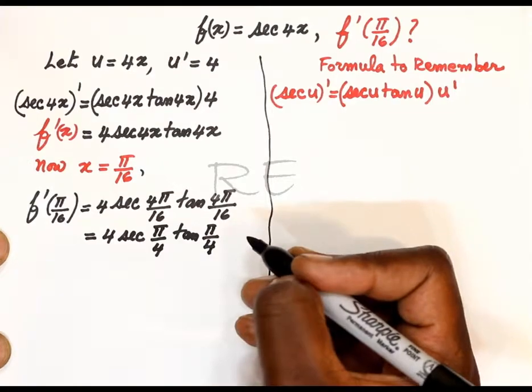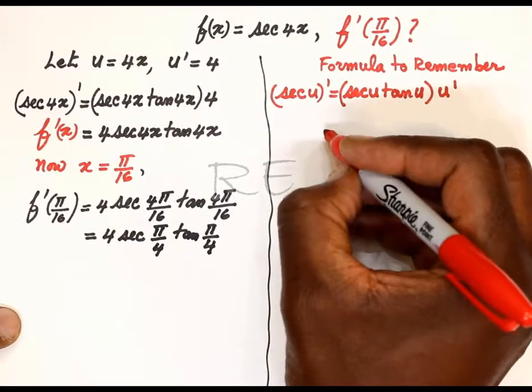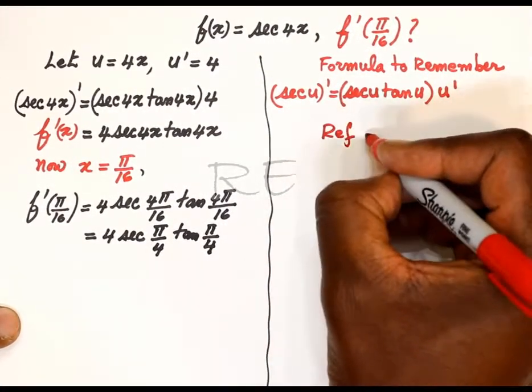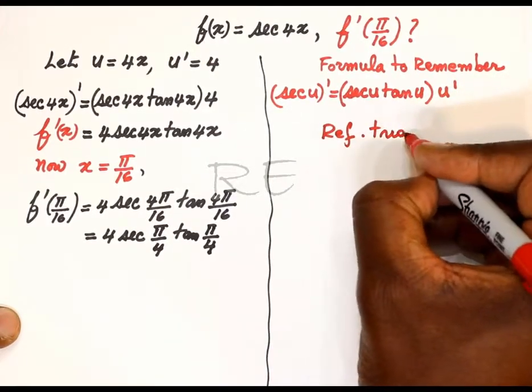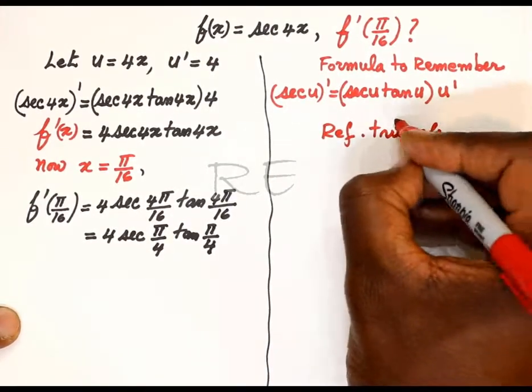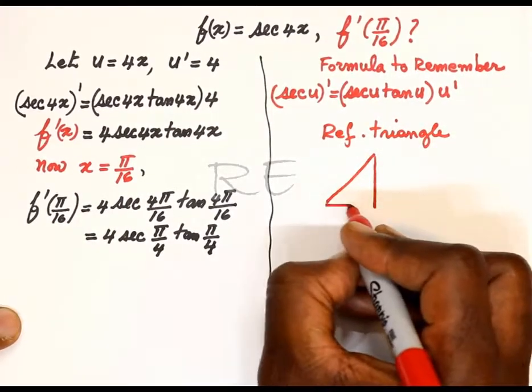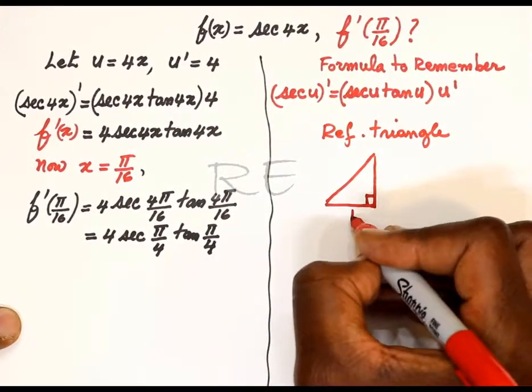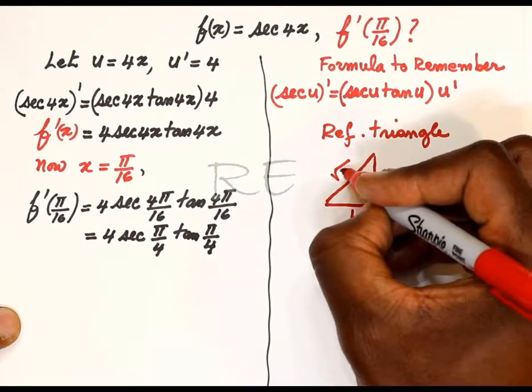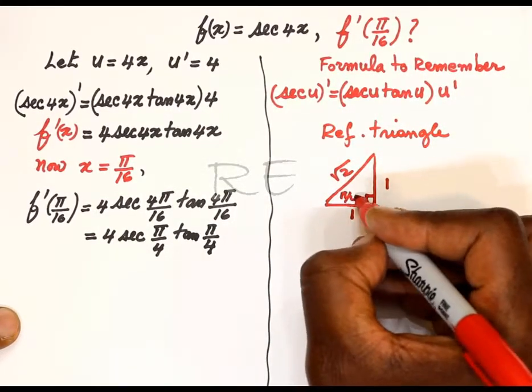Now let's go back to the reference triangle. If we don't have a calculator, we're going to use the isosceles right triangle, one one for the legs and square root of two for the hypotenuse.